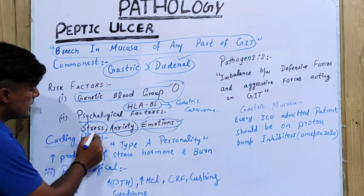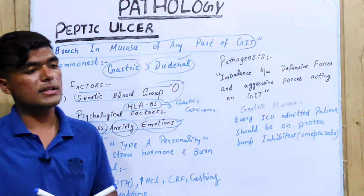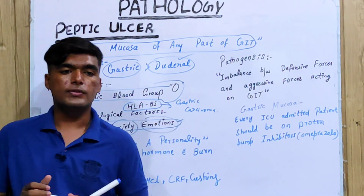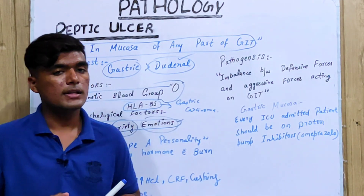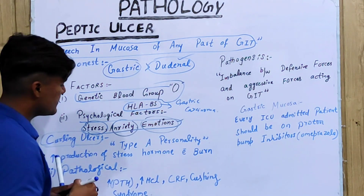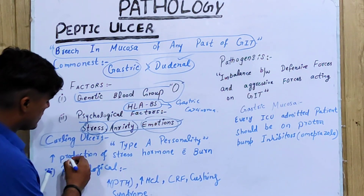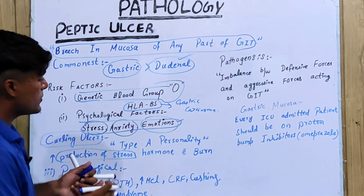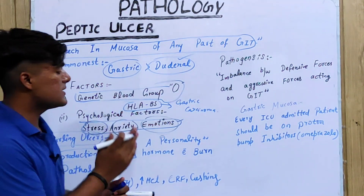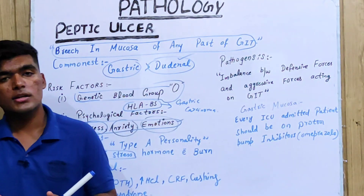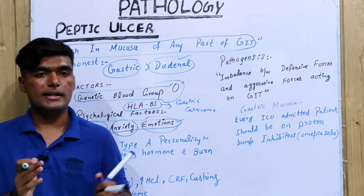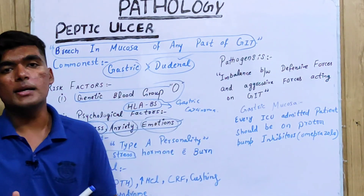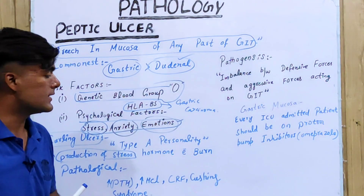Curling ulcer is basically a type of gastric ulcer, but its relation is basically with stress. Due to increased stress associated with burns, we develop an ulcer and we give that ulcer the name curling ulcer.